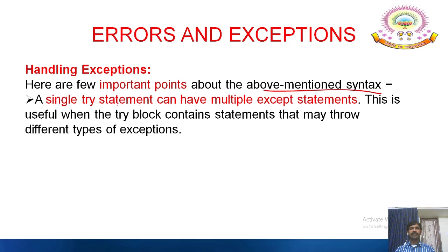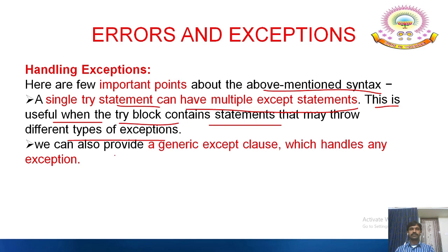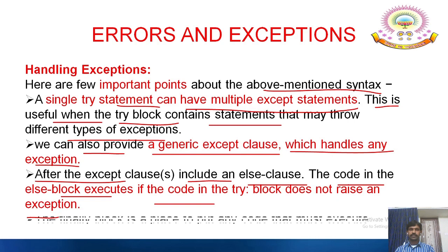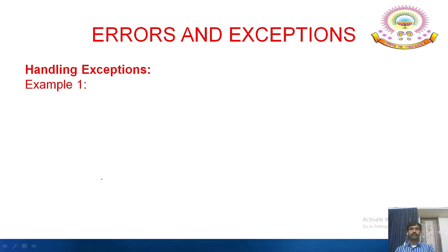A few important points: a single try statement can have multiple except statements, which is useful when the try block contains statements that may throw different types of exceptions. We can also provide a generic except clause which handles any exception. After the except clauses, an else clause can be included — the code in the else block executes if the try block does not raise any exception. The finally block is a place to put any code that must always execute.